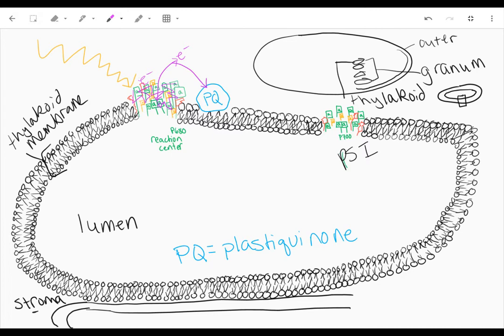Plastoquinone is then going to transfer that electron to a very special protein, and that next protein is actually a complex of different proteins called cytochrome b6f. We're going to draw that spanning the membrane here. I'll shorten it here but spell it out: cytochrome b6f.